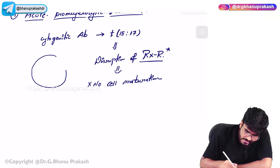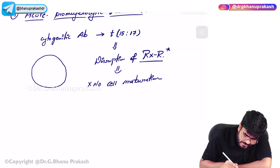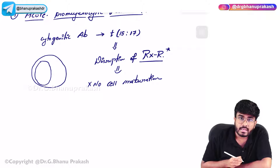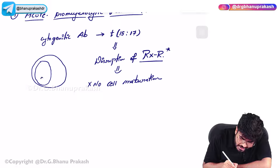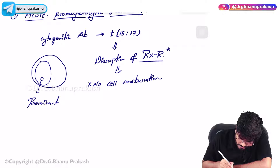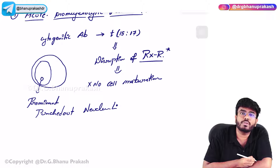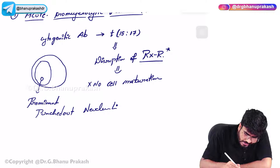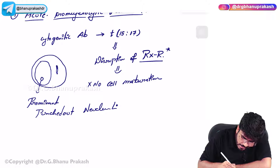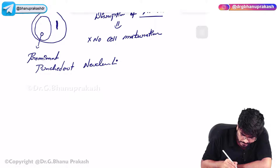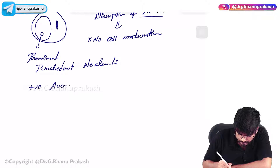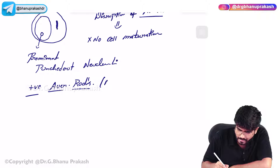How to identify acute promyelocytes? Inside the cells, a very prominent punched-out nucleoli is going to be present. In the cytoplasm, you can see a very high number of Auer rods. This is the type of AML in which you have the maximum number of Auer rods.